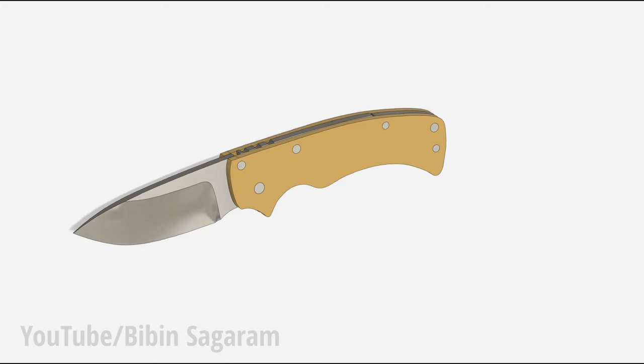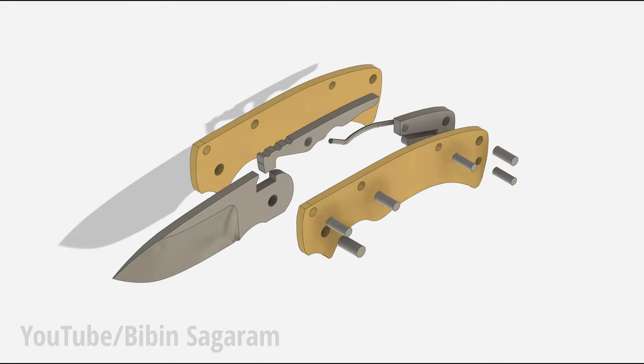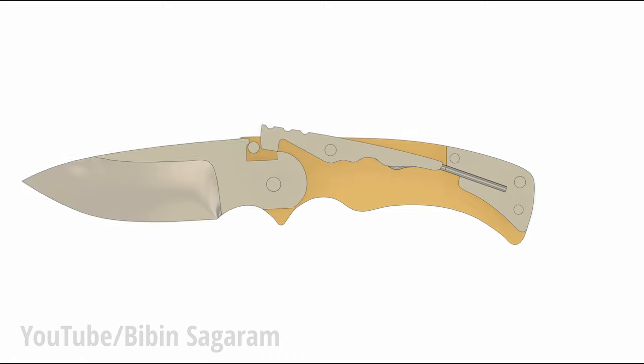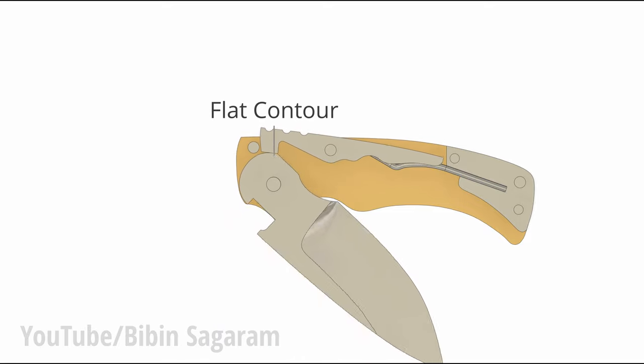I started by designing folding knife in Fusion 360. Folding knives need a way to keep the blade locked in place. Here I am going to use triad lock. To fold the knife the spring loaded lock has to be pushed down and this flat area will help to keep the knife closed in position.